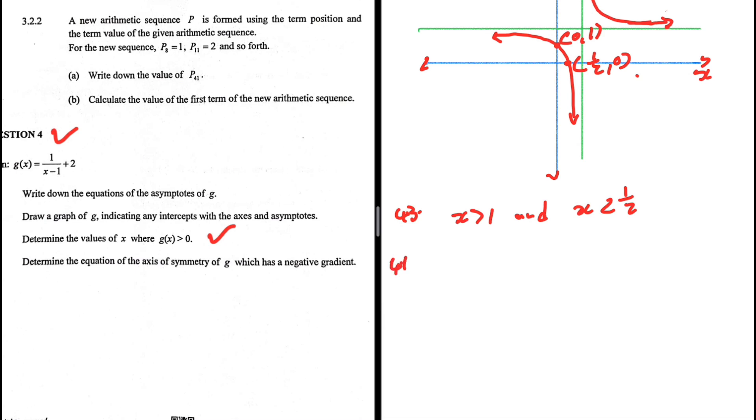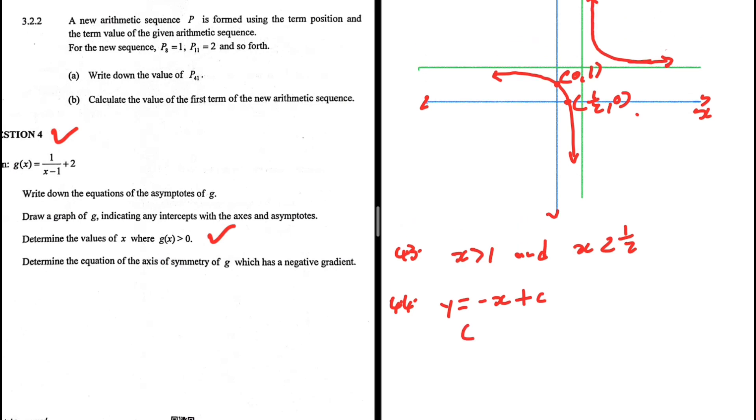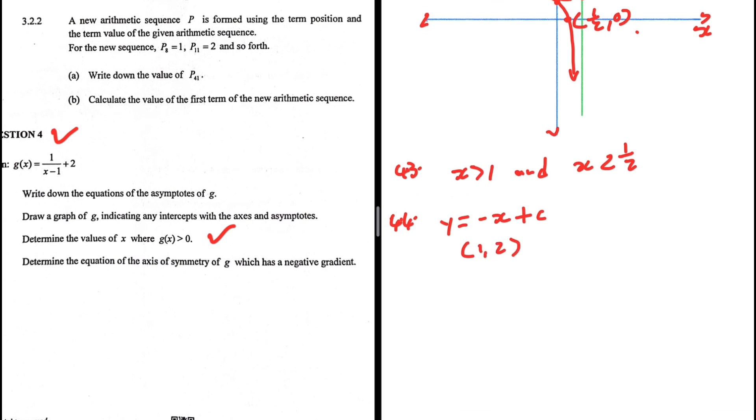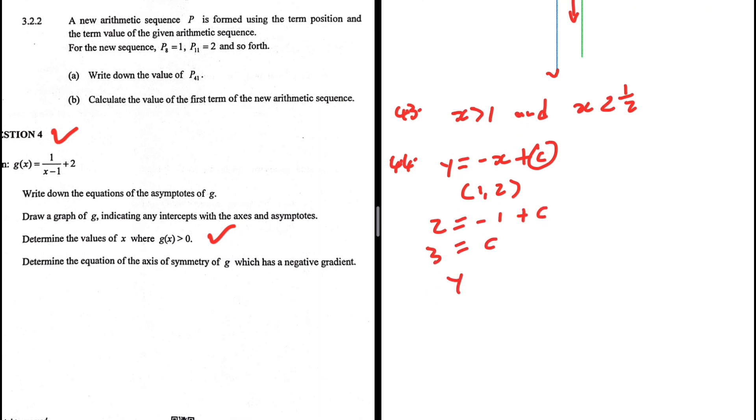4.4. Determine the equation of the axis of symmetry of G, which has a negative gradient. So the one that has a negative gradient is minus X plus C. If it had a positive gradient, it would be Y is equal to X plus C. That's how it works. And then the point you substitute here is where your asymptotes intersect. Our asymptotes, X is equal to one and Y is equal to two. This is the point we need to substitute in order to find this C on the axis of symmetry. Of which when we do that, two is equal to minus one plus C. So three is equal to C. Y is equal to minus X plus three.